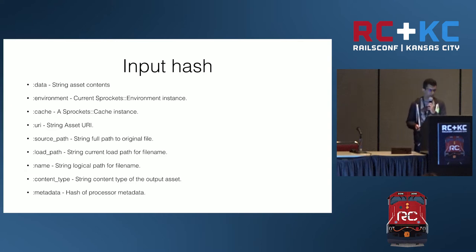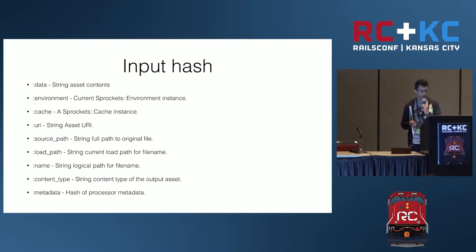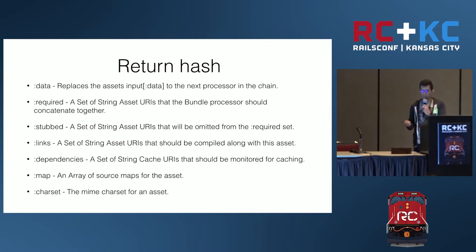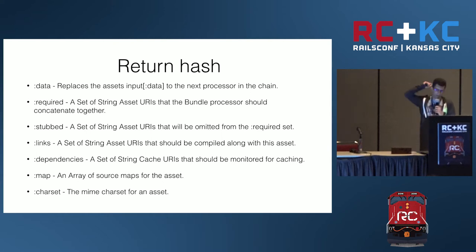The input hash has these keys by default: data, environment, cache, URI, source path, load path, and metadata — the most used keys. The return hash can contain anything, but some keys are special: the data key, the required key, the stubbed key, links, and dependency. When you have dependencies in your assets you declare them, and they are stored in the required key.